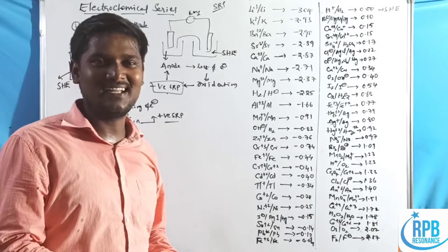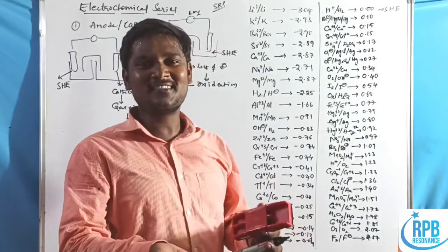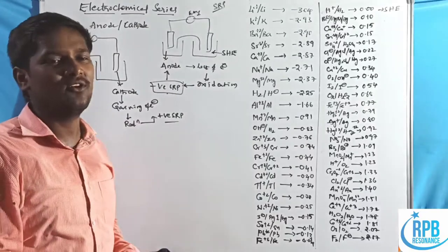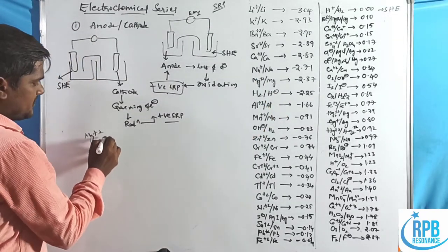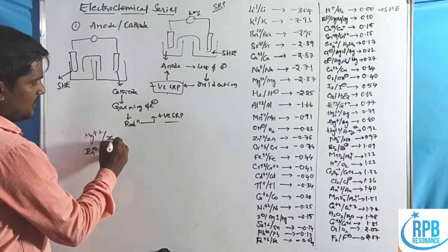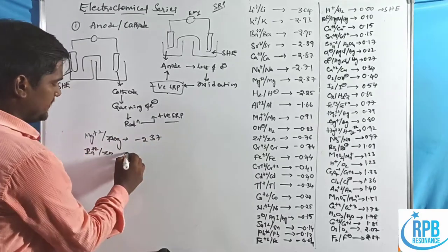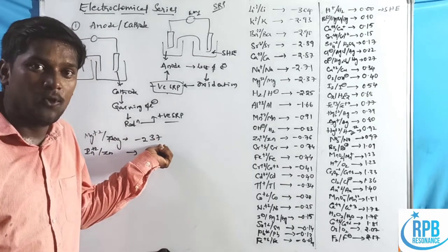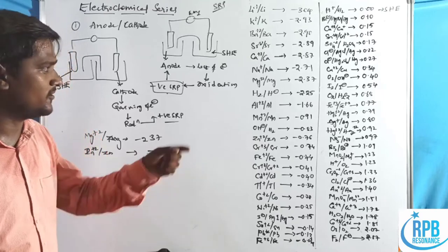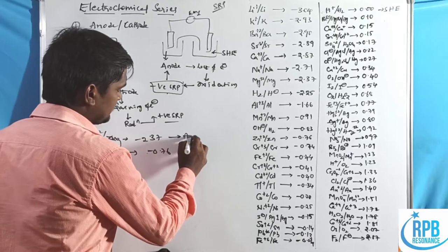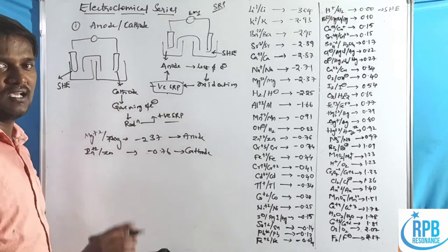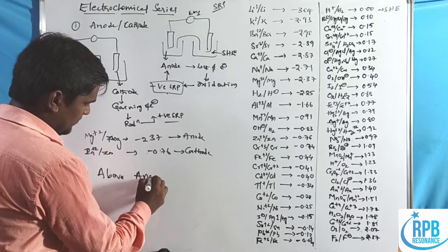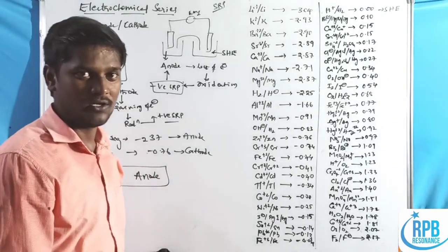When two negative values or two positive values are given, we use the series ordering. Top to bottom, the electron-releasing tendency decreases. For example, magnesium has SRP of −2.37 and zinc has −0.76. Magnesium has a higher tendency to lose electrons, so it acts as the anode. The simple rule: in the electrochemical series arranged from more negative to more positive, the above one is anode — 'A for above, A for anode.'